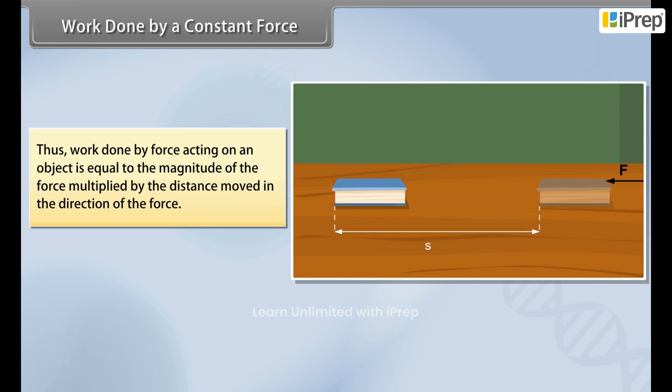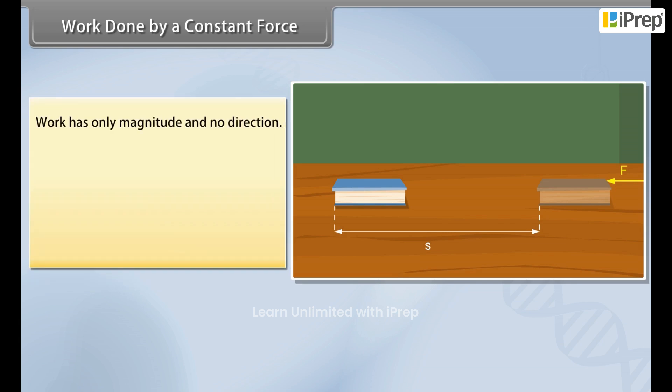Thus, work done by a force acting on an object is equal to the magnitude of the force multiplied by the distance moved in the direction of the force. Work has only magnitude and no direction.